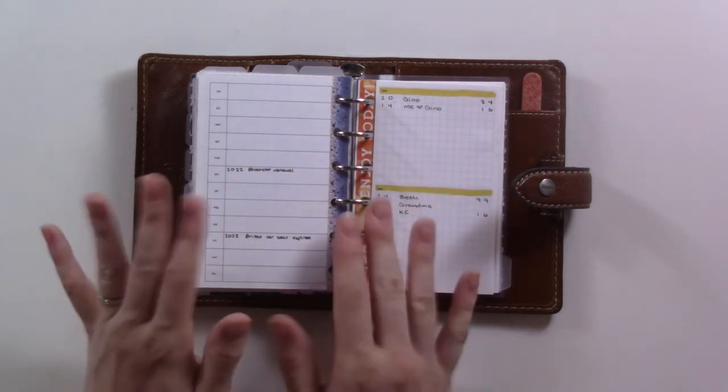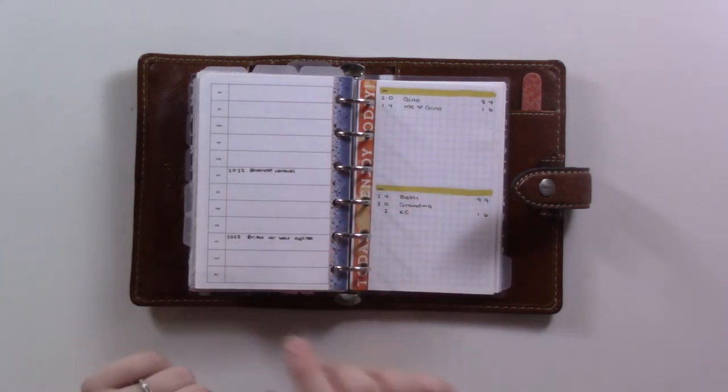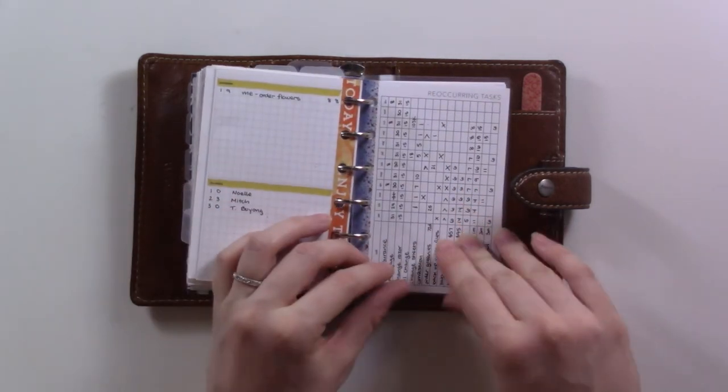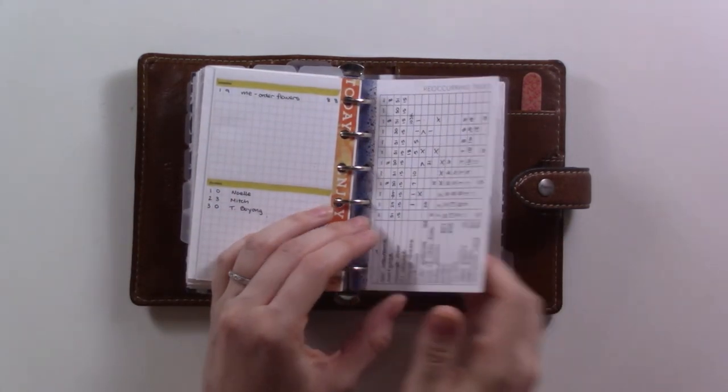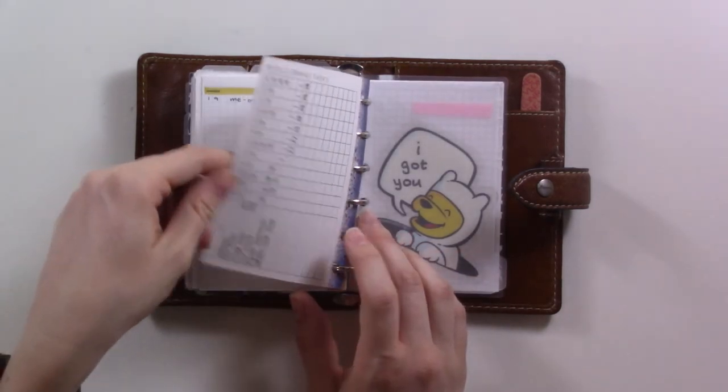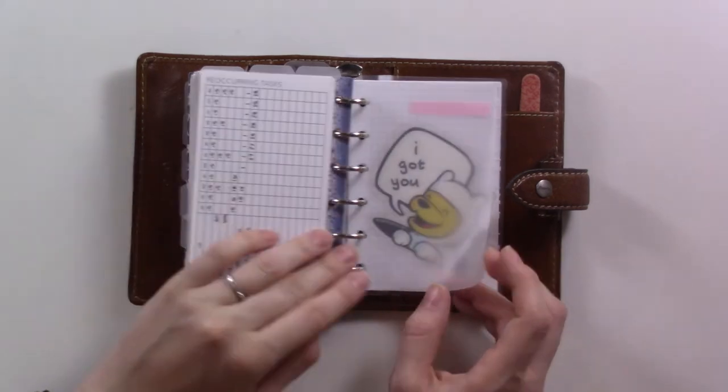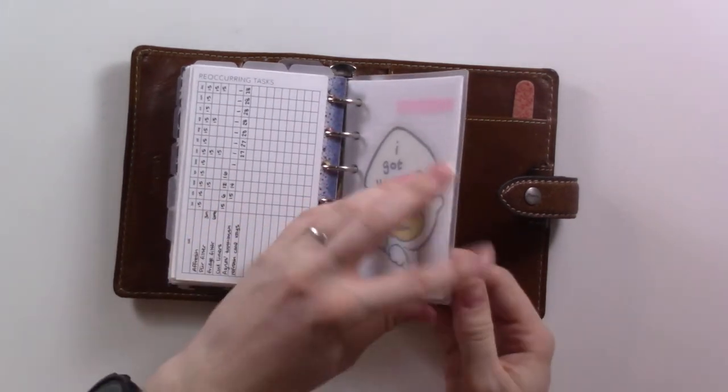This is birthdays and anniversaries, and then this is recurring tasks. You know, the last time I changed the oil in the car, that kind of thing. Changed my toothbrush. Then in the back is some spare paper.